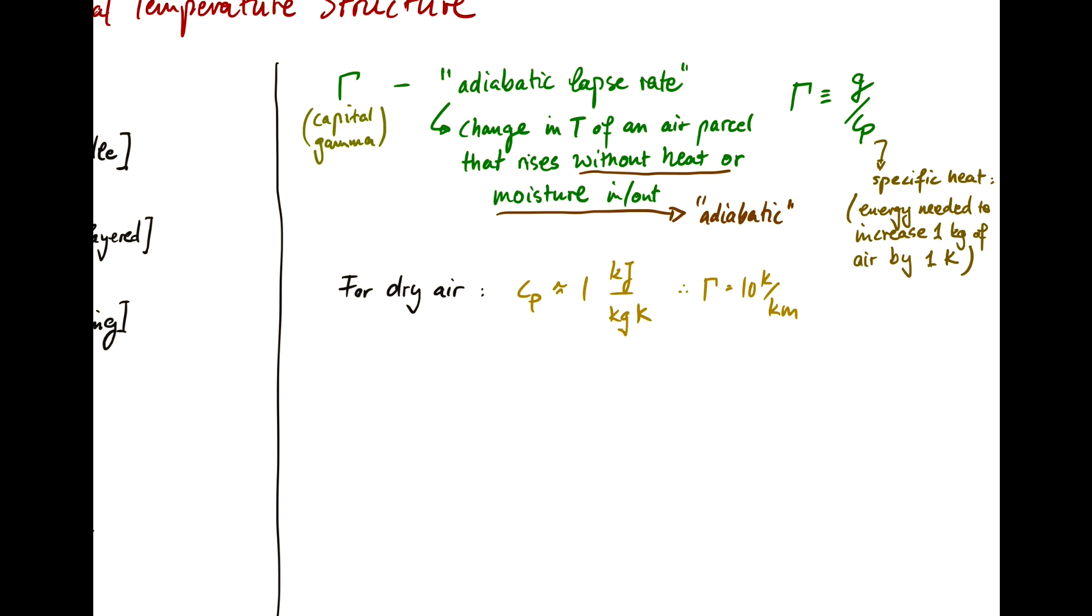But that's just for dry air. Typically the atmosphere isn't dry, it's moist to varying degrees. So typically for a moist atmosphere, you will have the specific heat somewhere between one and two kilojoules per kilogram per kelvin.